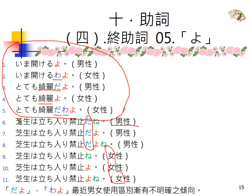芝生就是草皮，「芝生立入禁止」是不可以踏进去的意思。「立入」不是说站着就不可以进去，躺着爬着就可以——它是强调后面的动词的意思：禁止进入。「芝生立入禁止だね！、だよ！、だよね！」，这是男孩子在用，有だ的都是男孩子在用，不管ね、よ。女孩子的话就不要加だ：「芝生立入禁止ね！、よ！、よね！」。